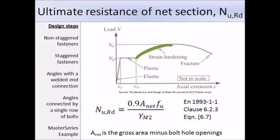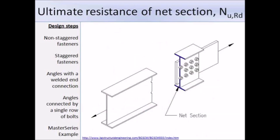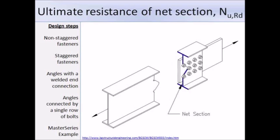For the design ultimate resistance we deal with the net cross-section area — the area which has the fastener holes through it. There are multiple failure paths and this is just one of them. Here is another possible failure path where the failure path is a zig-zag pattern. The net area for this zig-zag path will be different to the one where the failure path was a straight line.